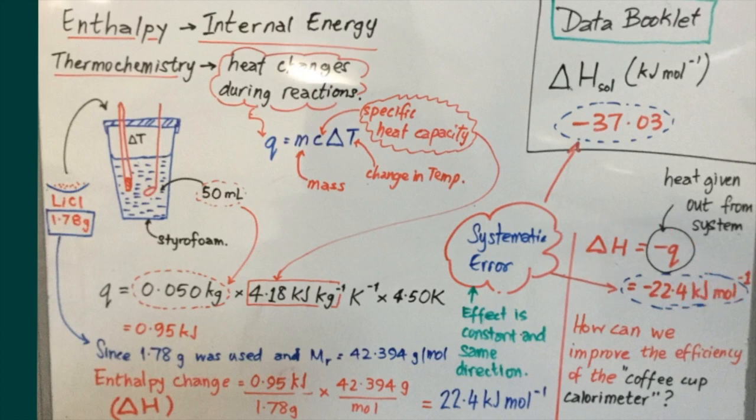But before we complete these calculations, it is of utmost importance to determine the sign for this enthalpy change. In this particular reaction, the change in temperature was positive, which means that heat was given out from the system. Because the system loses heat, enthalpy change must be negative, meaning that we must put a negative sign in front of this value for 22.4 kilojoules. So the value should be negative 22.4 kilojoules to match with the stated data booklet value of negative 37.03 kilojoules per mole for the heat of solution for lithium chloride.